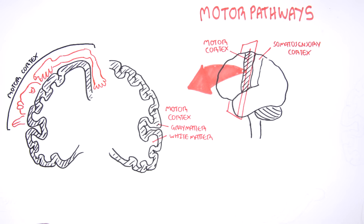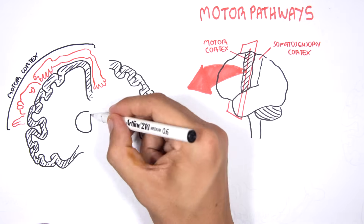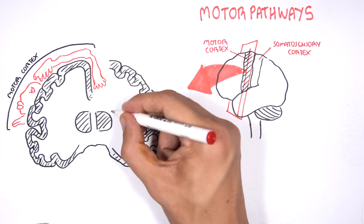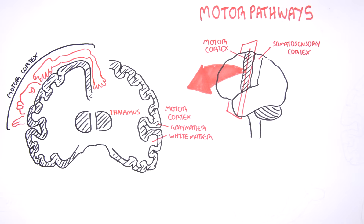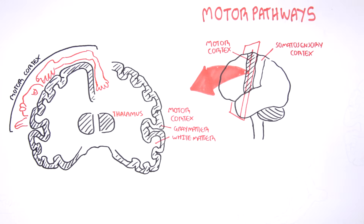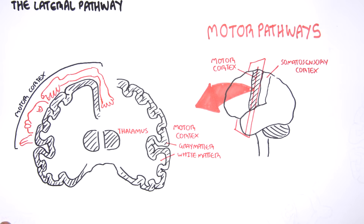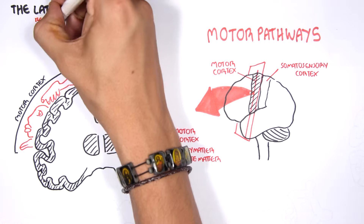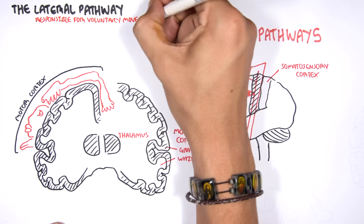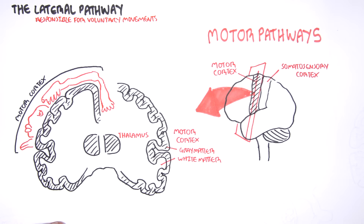In the cortex itself, there is a region called the thalamus, which is the relay station — quite important to know. The motor pathways can be divided into two main pathways: the lateral pathway and the anterior medial pathway. We will first focus on the lateral pathway, which is responsible for voluntary movements that we control. There are three main tracts involved in the lateral pathway.